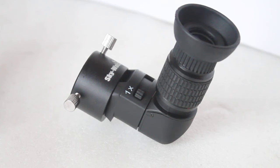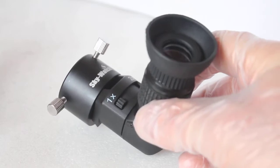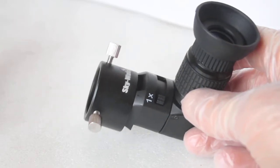Howdy folks, thank you for tuning in. Today we're going to have a look at the Skywatcher 90-degree polar scope eyepiece. This is designed to fit on the Skywatcher EQ3, EQ5, EQ6, and Star Adventure mounts.